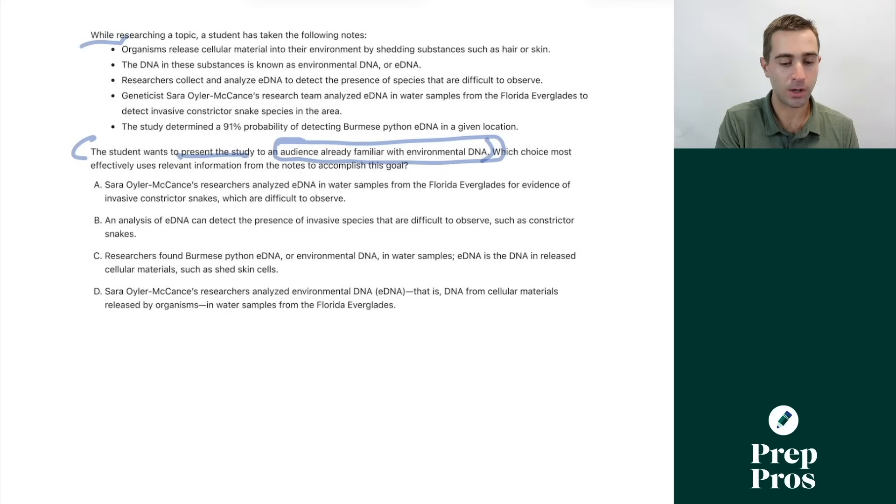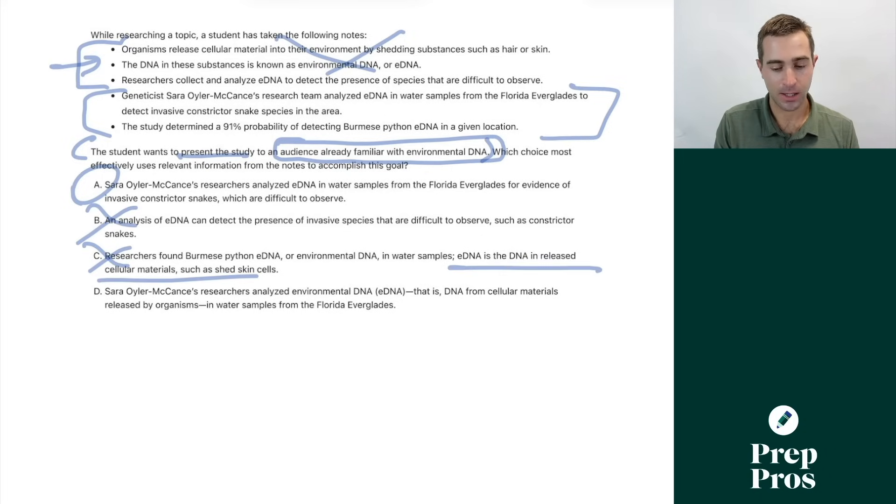As we look through our notes here, what we can see is the top three notes are giving information about environmental DNA. So we don't want to include those, but the bottom two are giving information on the study. And that's how we can see that A is correct here. It's not giving information about eDNA and it's presenting the study. This gives information about eDNA. This gives information about eDNA. And same issue here, that's how we can eliminate all of those answer choices. And that's how we can identify A is our correct answer.